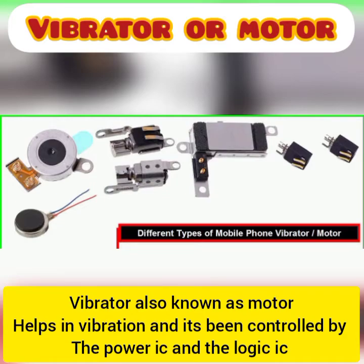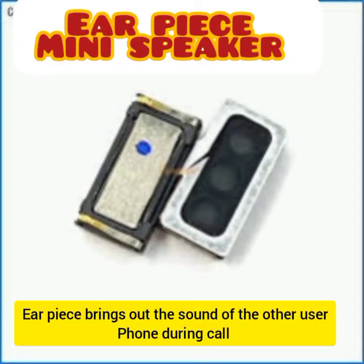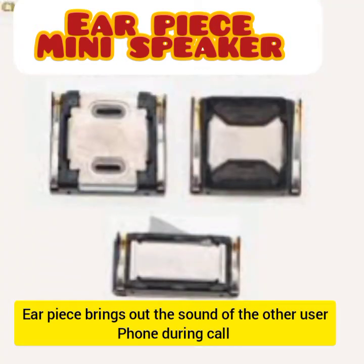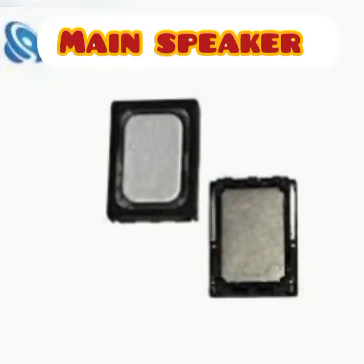The next part is the mini speaker, also called the earpiece. It is always located at the top side of the mobile phone. It helps in bringing out sound from the mobile phone — it's a tiny speaker, different from the main speaker. When making calls, it brings out the voice of the other user for you to listen.